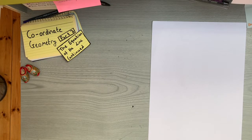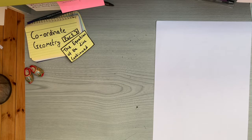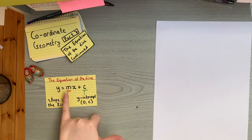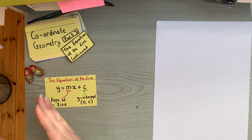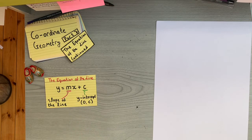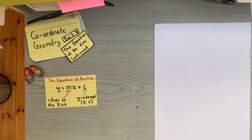In the last video we had a brief introduction to the equation of a line. In this video we're going to look at what the equation of a line can tell us about that line. Normally we always try to get the equation of a line in the form y = mx + c, where c is a constant. The coefficient in front of the x represents the slope of the line, and the constant by itself represents the y-coordinate of the y-intercept.